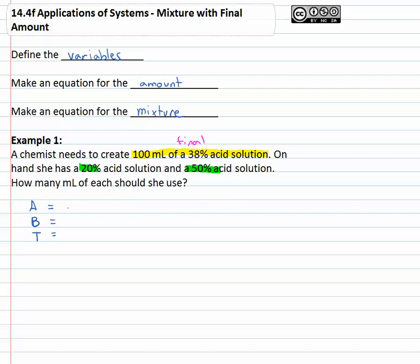So we're going to do A is the amount we start with. B is the amount added and T is going to be the amount total that we end up with.